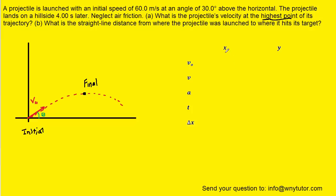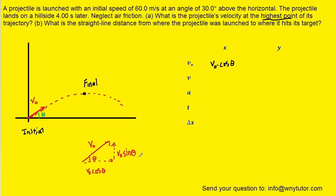Here is the table, organized according to x and y components. We have initial velocity, final velocity, acceleration, time, and displacement. In the x direction, the initial velocity is v₀ multiplied by the cosine of the angle. You can draw a right triangle from the original diagram: the hypotenuse is the initial launch velocity, the x component is adjacent to theta so we use cosine, giving v₀cosθ. The y component is opposite theta, so we use v₀sinθ for the initial velocity in the y direction.